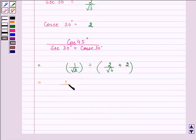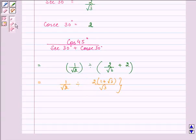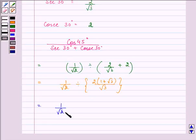It is further equal to 1/√2 divided by—taking √3 as the LCM, I am taking 2 common—we are left with 1 plus √3 in the bracket. Which is further equal to 1/√2, and I will write its reciprocal with a multiplication sign.